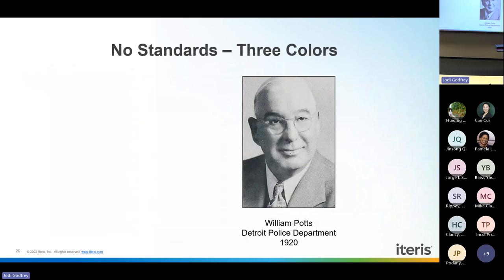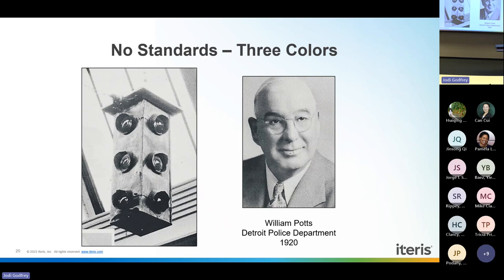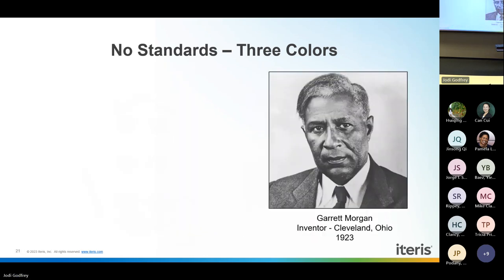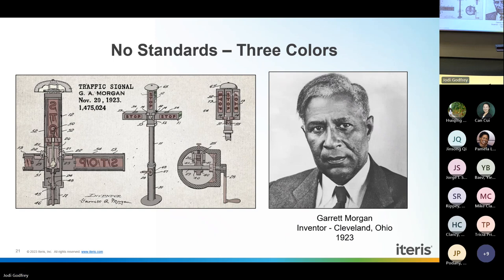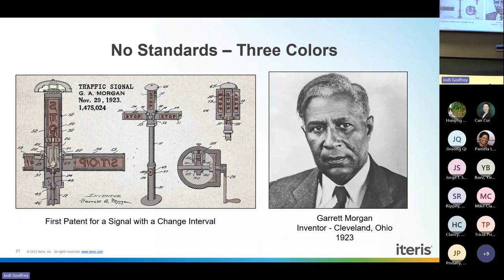William Potts of the Detroit Police Department came up with the first three-color signal, made of tin, plywood, and colored lights, manually controlled. Garrett Morgan — the inventor who also invented the gas mask — patented a traffic signal that was the first patented signal to include a change interval. His semaphore design included a mode where the semaphore arms came together as a change interval, and that concept was incorporated into the evolving three-color system: green to yellow to clear vehicles, then red.